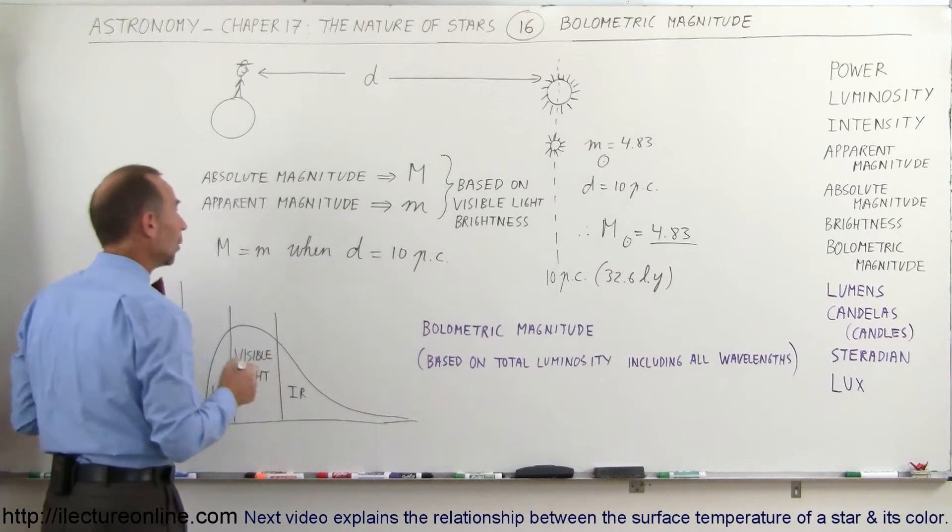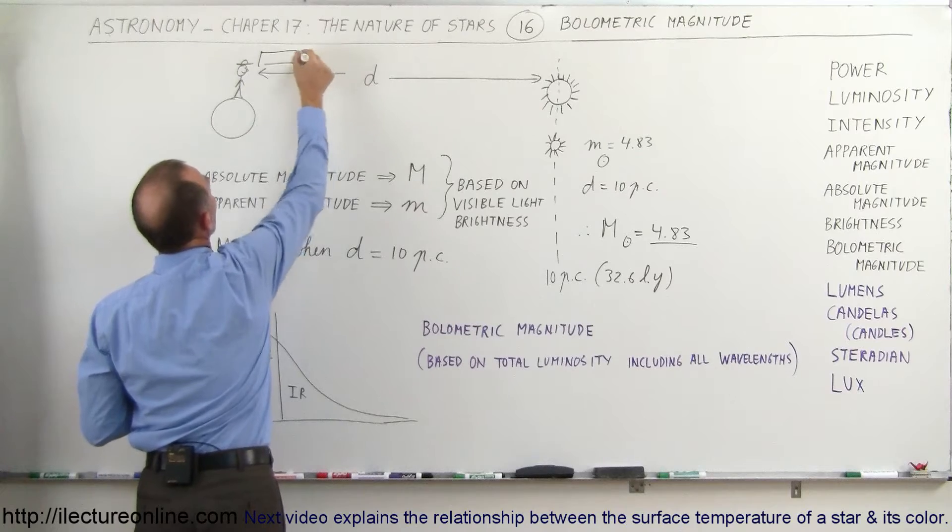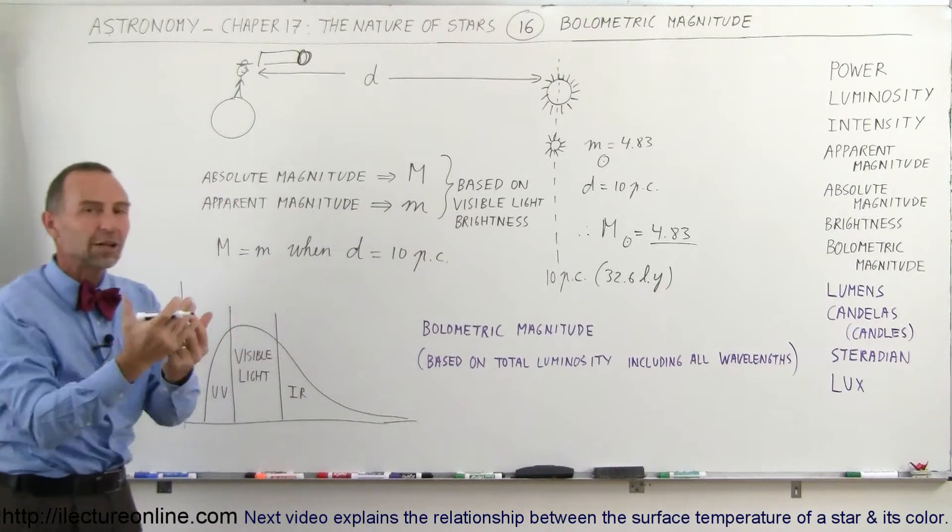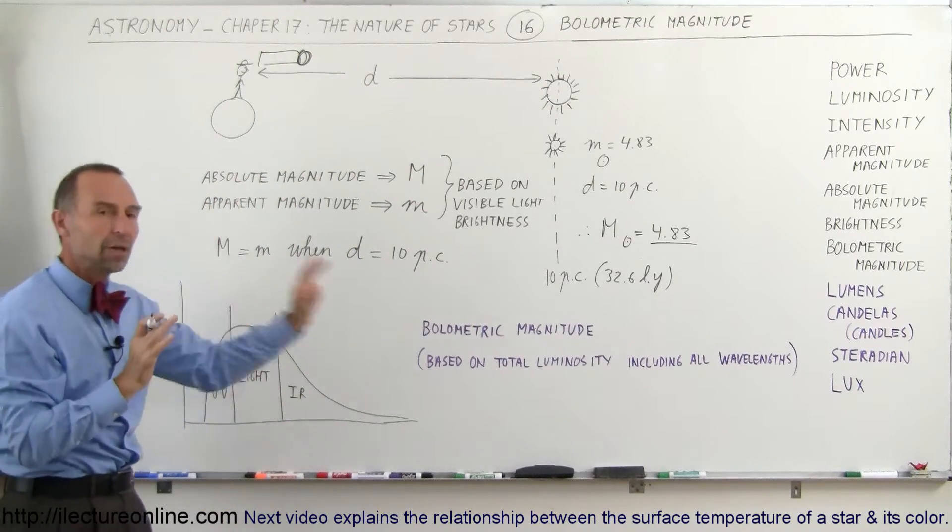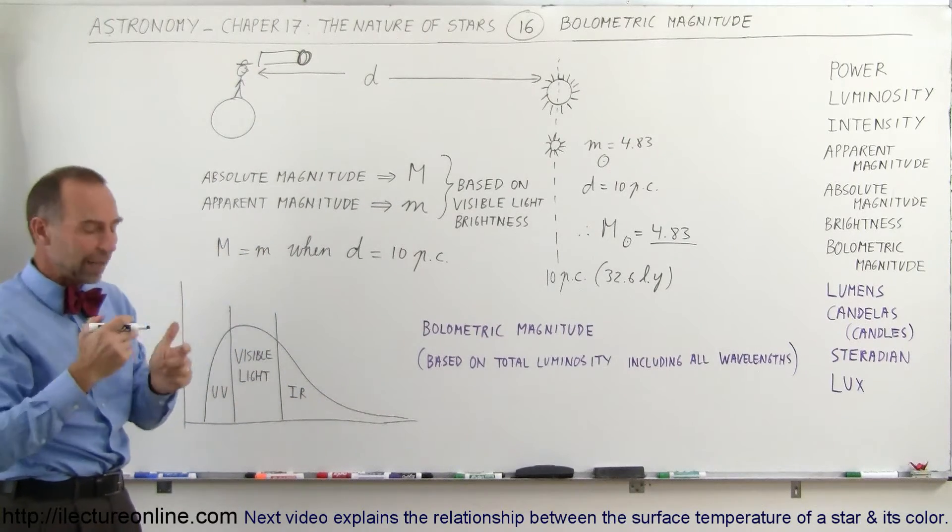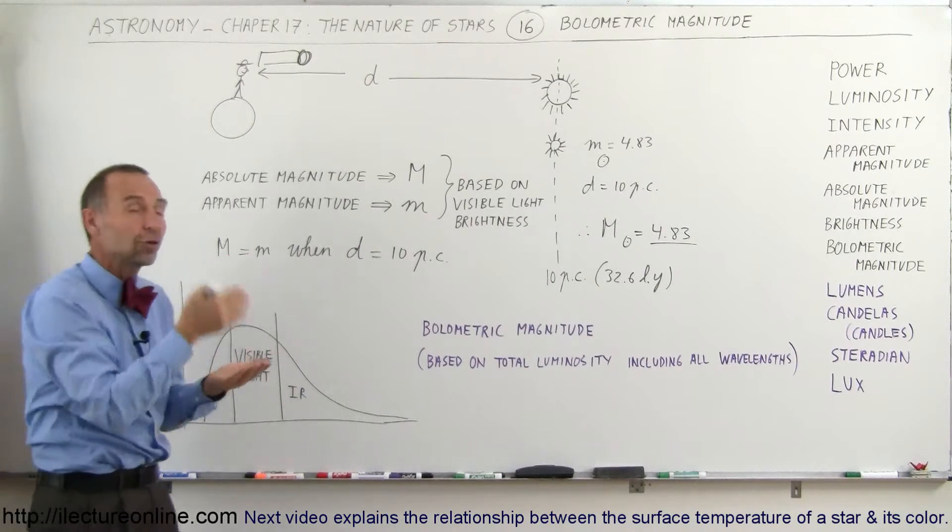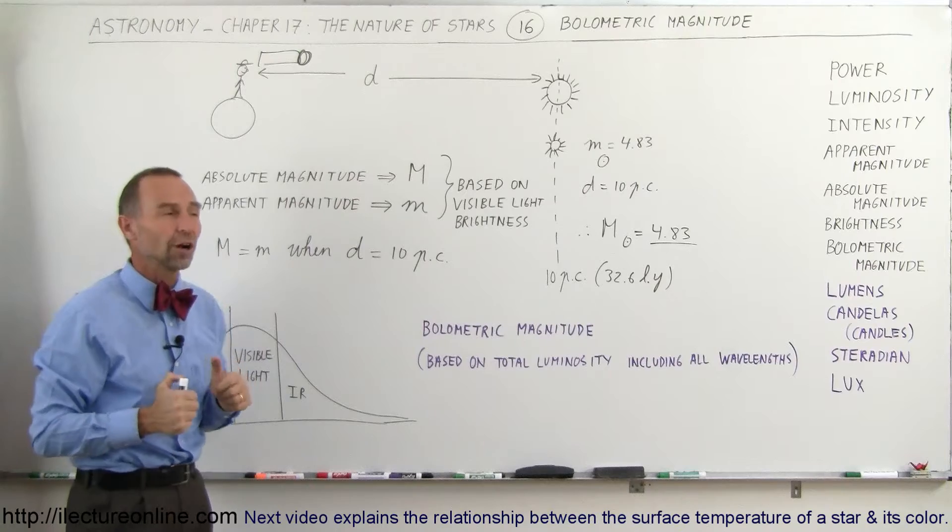What we do is we observe this with a telescope, and then we put a filter on there. Typically, we put a filter that allows visible light to pass through and blocks out infrared and blocks out UV. So only the visible light gets through, and so we base the apparent magnitude, and therefore the absolute magnitude, on just the visible light we receive from the star.